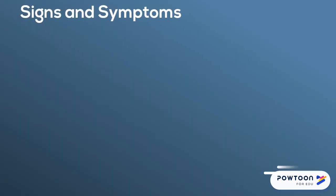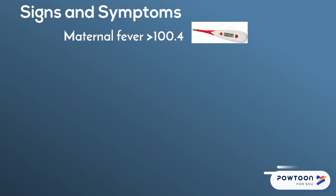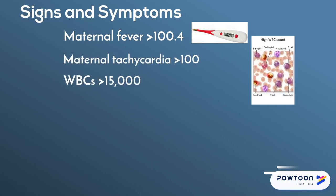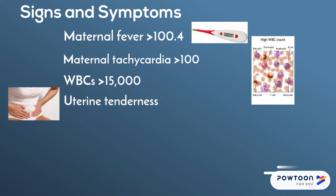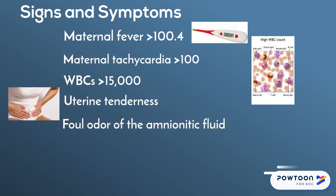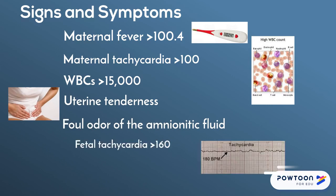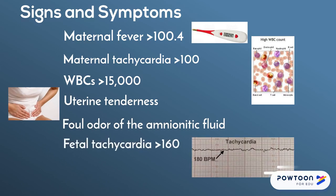There are several signs and symptoms of clinical chorioamnionitis, including a maternal fever greater than 100.4 degrees Fahrenheit, maternal tachycardia greater than 100 beats per minute, a white blood cell count greater than 15,000, diffuse uterine tenderness, malodorous amniotic fluid, as well as fetal tachycardia greater than 160 beats per minute.